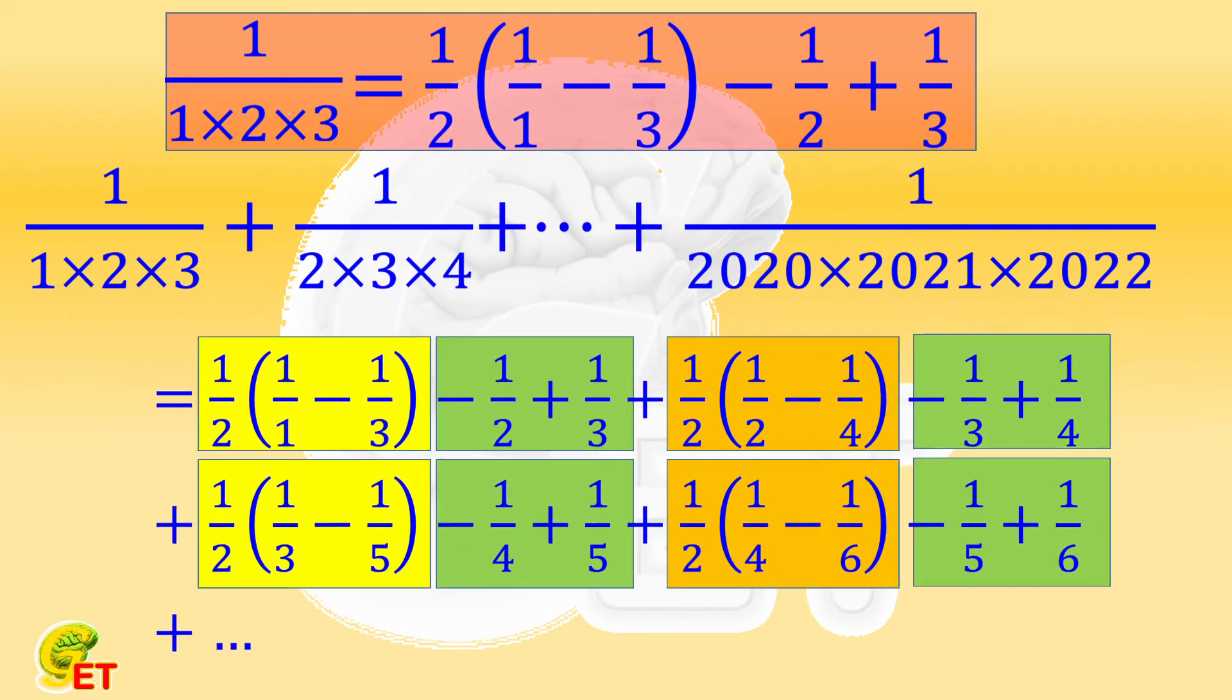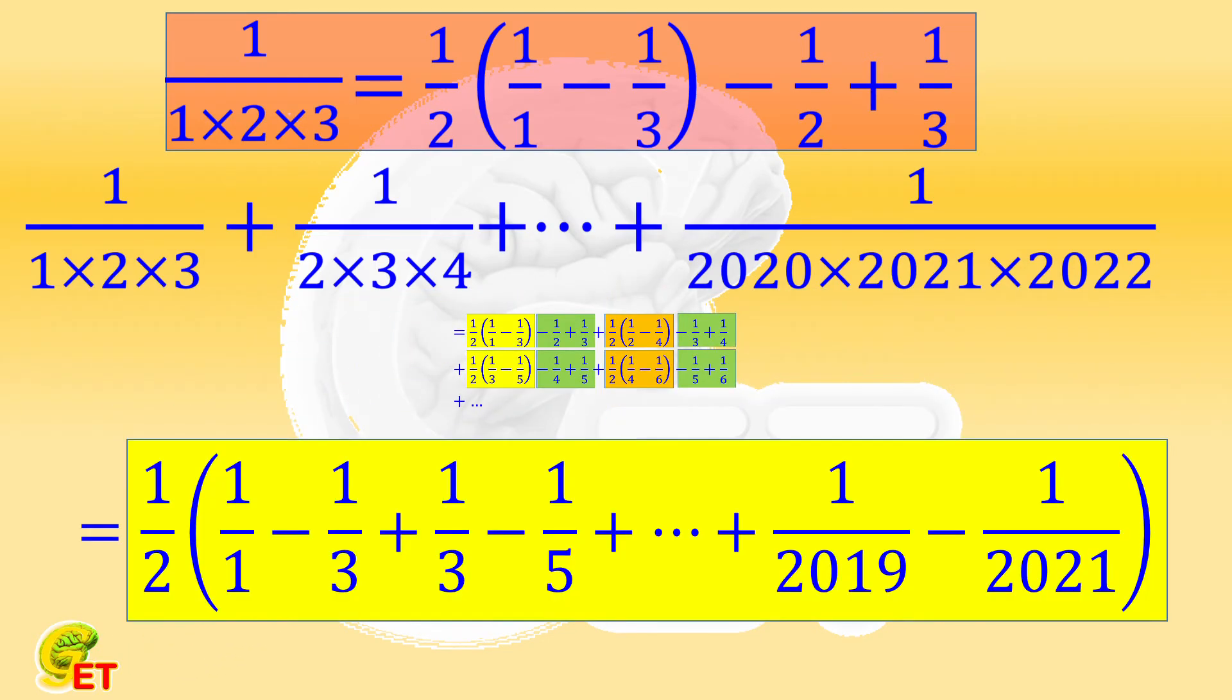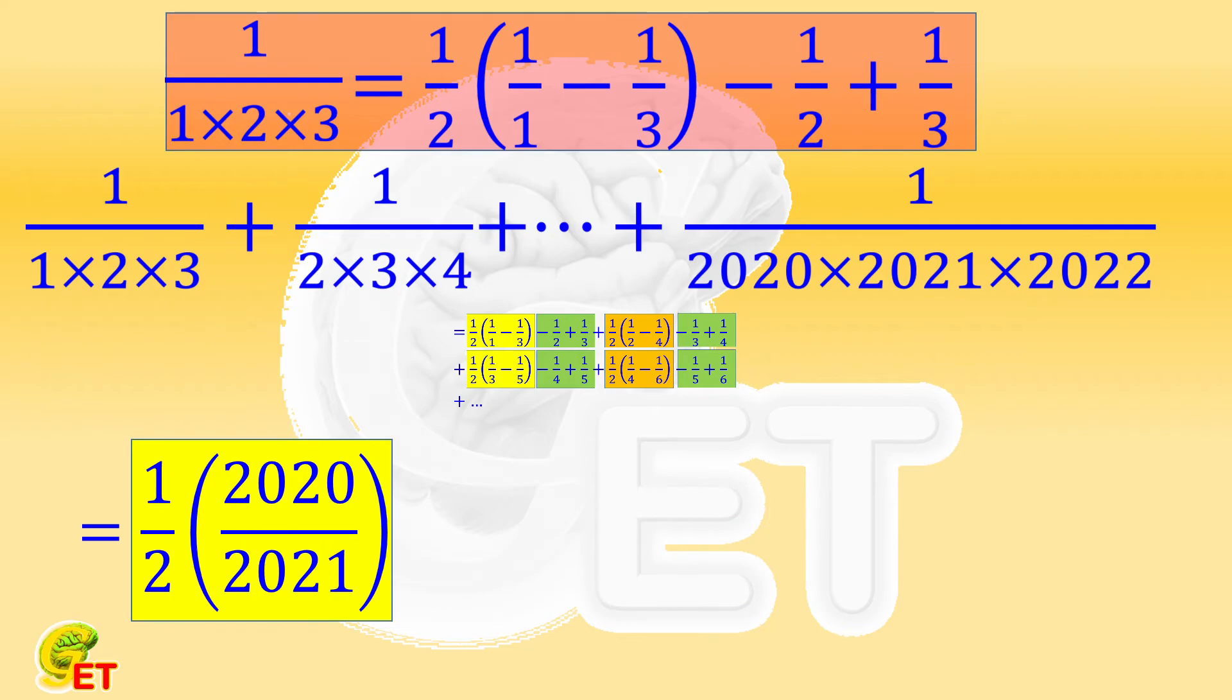Let's first take a look at those yellow terms. Its form gets back to the classical question. So we know, its result is half of 2020 over 2021.